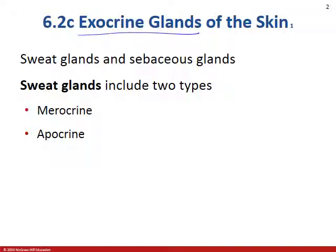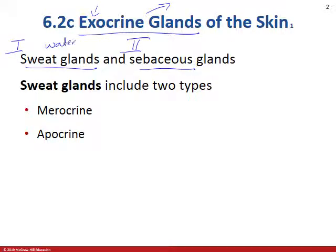We'll start with the exocrine glands and tell you that they come in two different forms. Exocrine means we're going to release something outside of the body. So we have sweat glands and then we have sebaceous glands. Sweat glands produce a watery substance and sebaceous glands produce an oily substance.